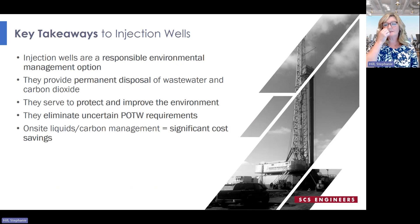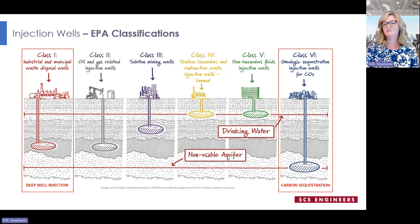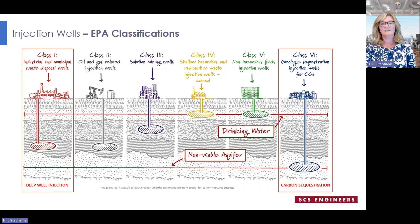A little bit about injection well classifications. EPA defines well classes by their intended use. There are six classes for injection wells, each with their own set of regulatory criteria. In this overview, I'm going to talk about Class 1 disposal wells, or those used for deep well injection, and Class 6 injection wells, those dedicated to carbon sequestration.